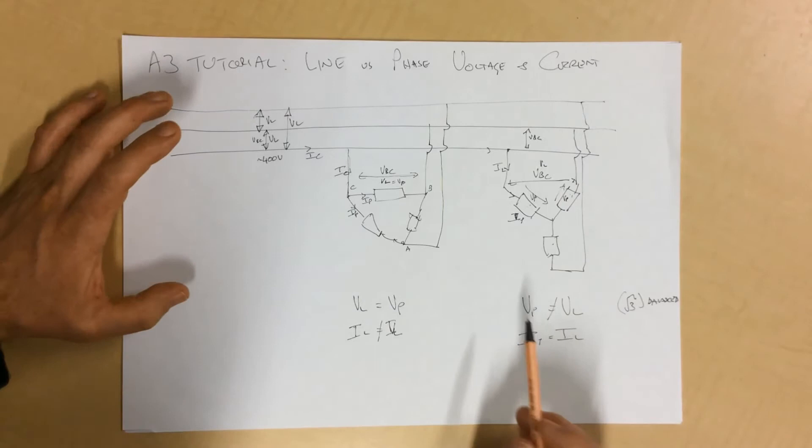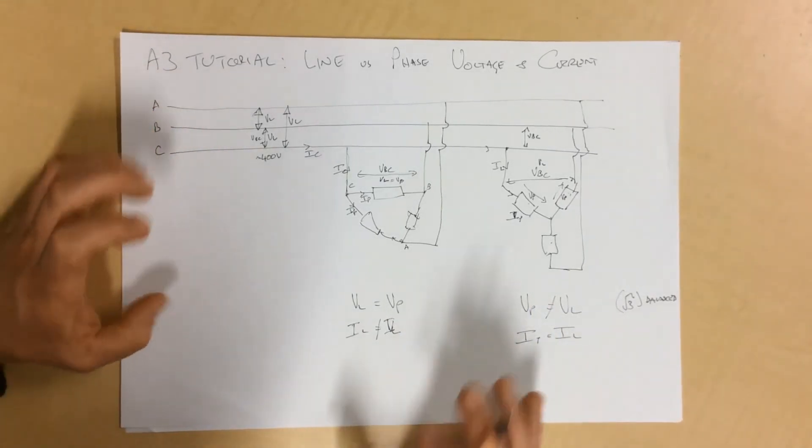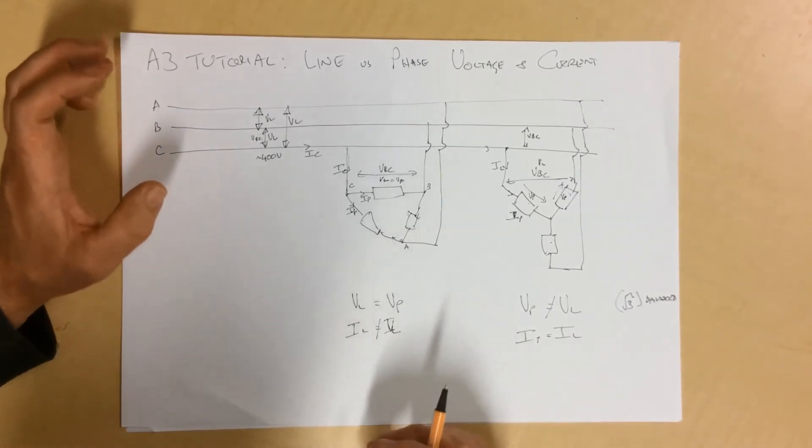So, from this, we can see that the term phases and lines refers to what part of the circuit you're talking about, and whether it is a star or a delta system.